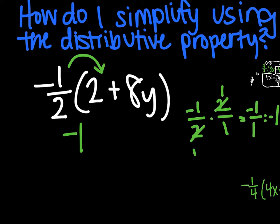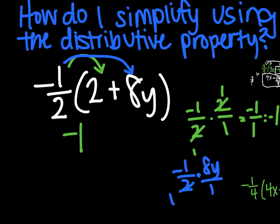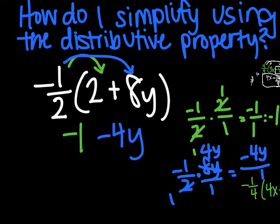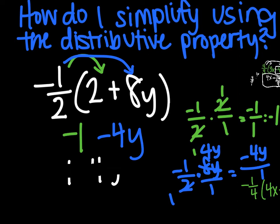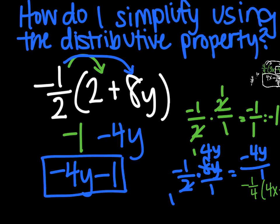Feed the birds again: negative 1/2 times 8y over 1. Simplify before you multiply — I can divide by 2. So I have negative 1 times 4y, which is negative 4y over 1, which is simply negative 4y. My final answer is negative 1 − 4y, but you want to write this in ABC order, so take negative 4y and put that in front. So: negative 4y − 1.